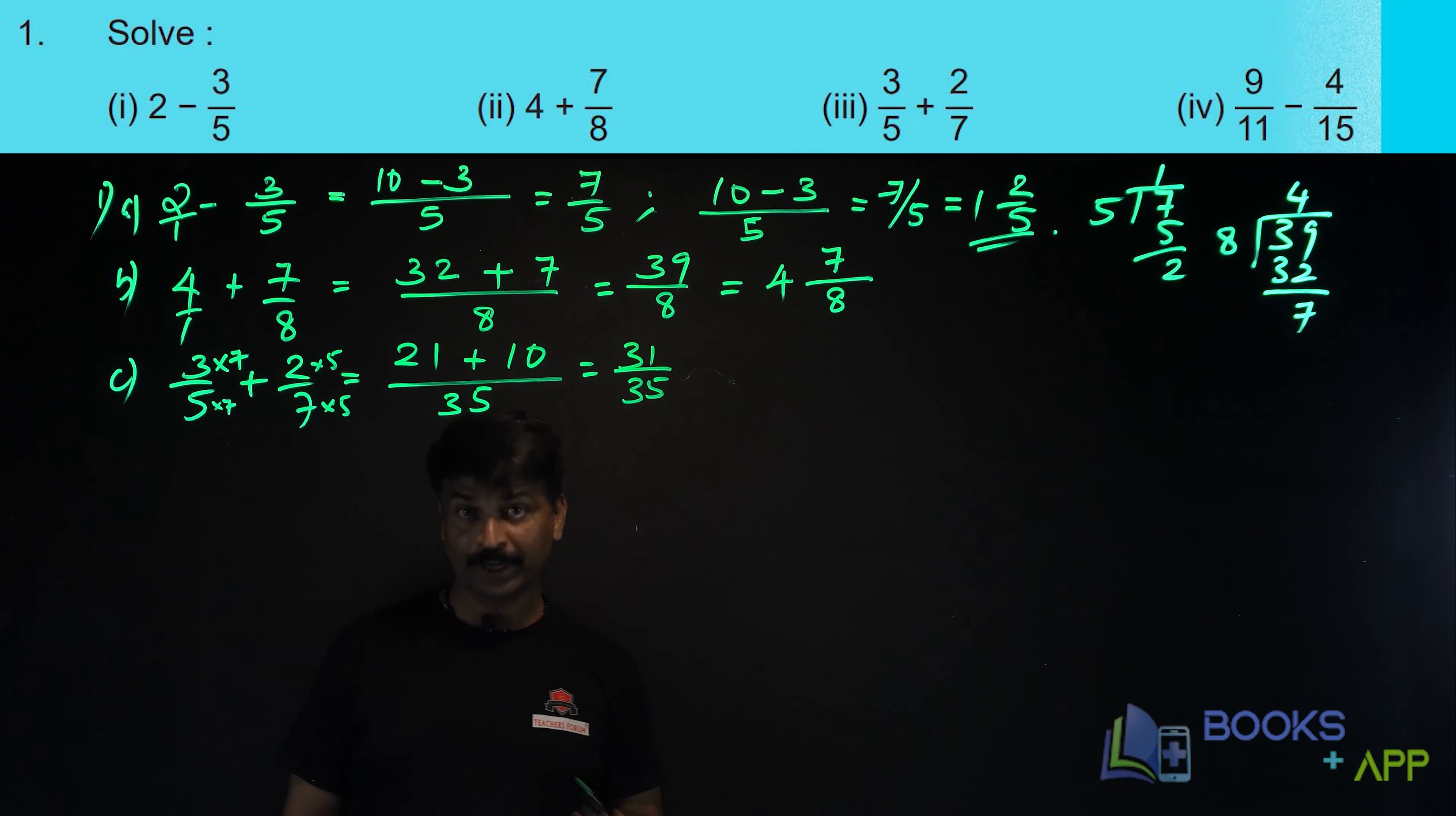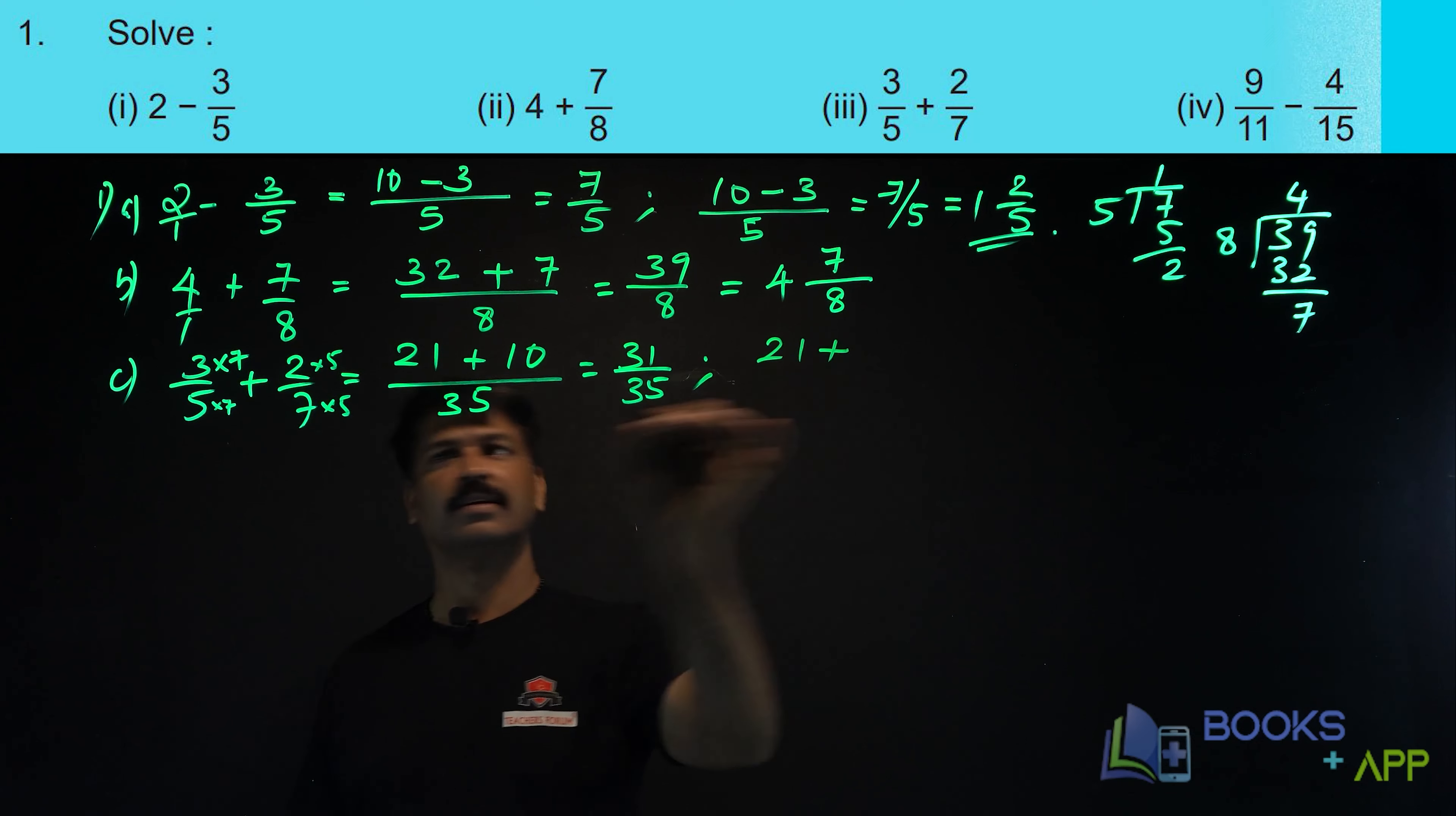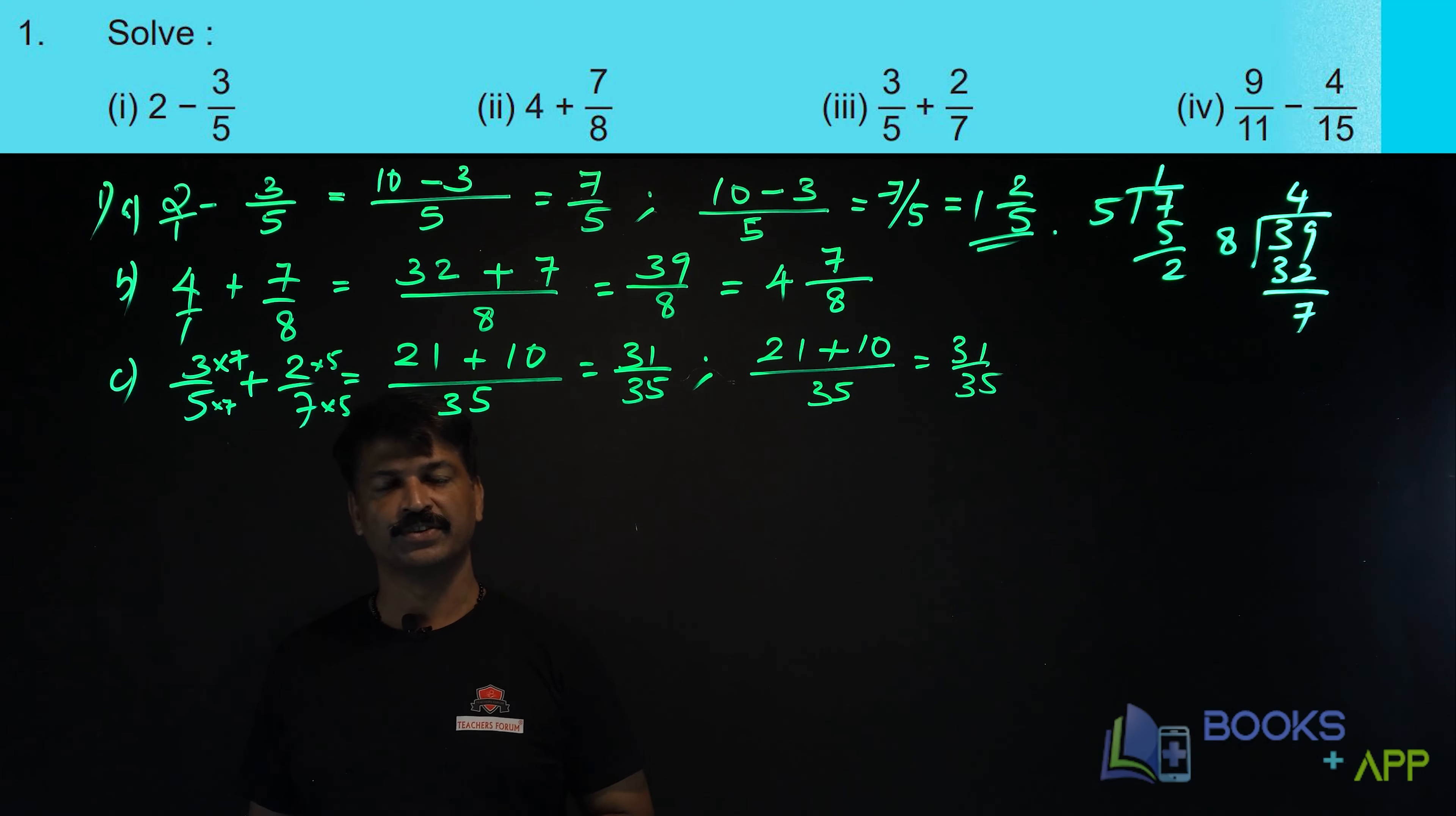Or in easy way, how can you do this? See, we solve this 8, 4's are plus 1, 7's are by 8 into 1. The same way, if you want, you can solve this. 7, 3's are 21. 5, 2's are 10 divided by 5, 7's are 35. What is the answer? 31 by 35. This way also, you can solve this.